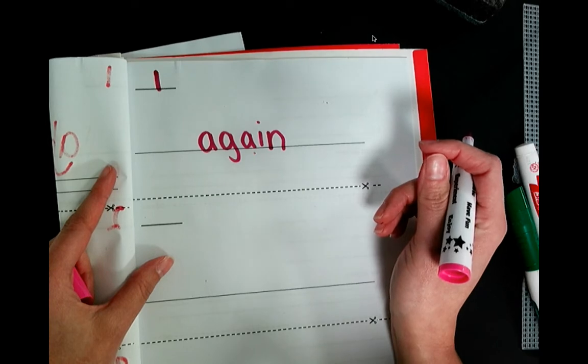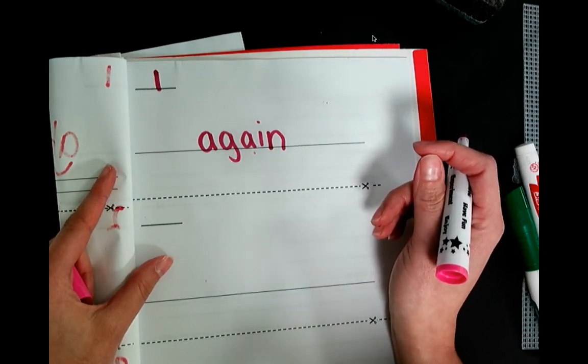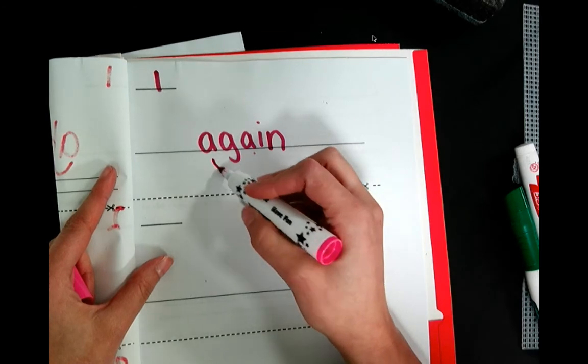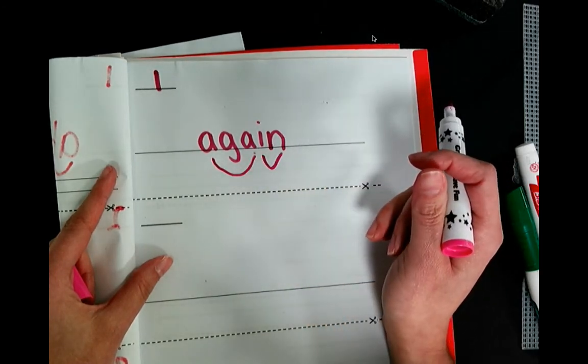How can we scoop that? Let's see. Let's scoop that just like we did against. Kind of reminds me of against. A, G, A, I, N. Again. Again.